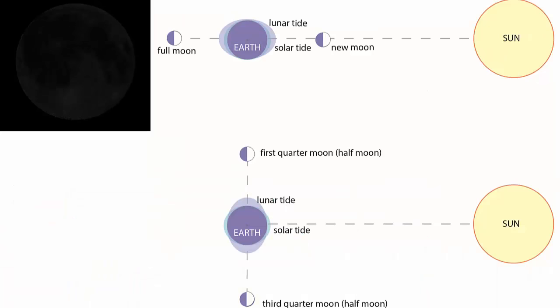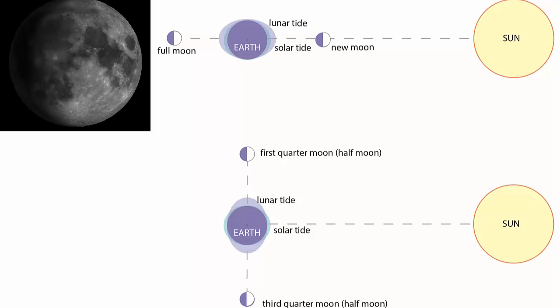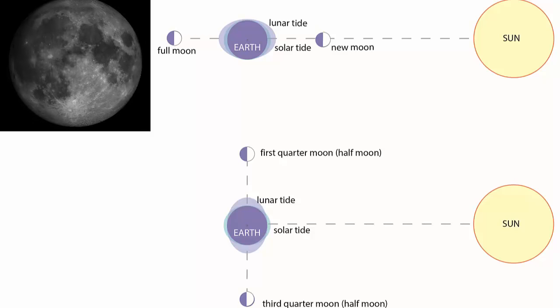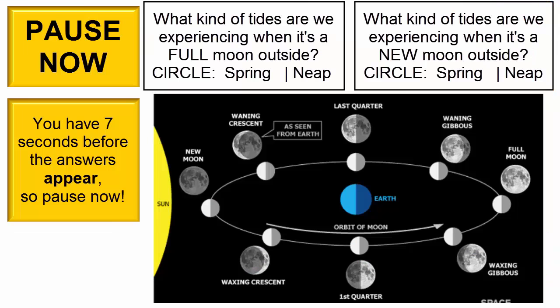Turns out we can walk outside at night, look up into the night sky, and based on the phase of the Moon, determine whether we're experiencing neap or spring tides. Pause now.